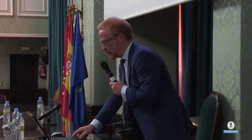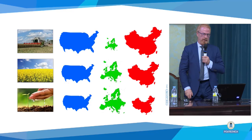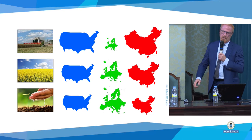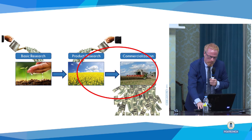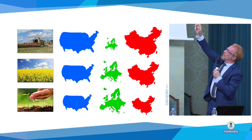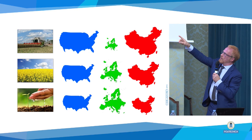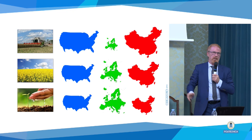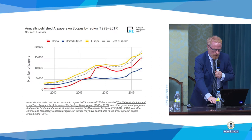In China, AI is being put in public schools and so on. What we can see is, in the beginning, you get three areas: basic research, product research, and commercialization. Europe is very, very bad in the commercialization part. It is still strong in basic research, but China is growing very, very much, and is picking up extremely fast.